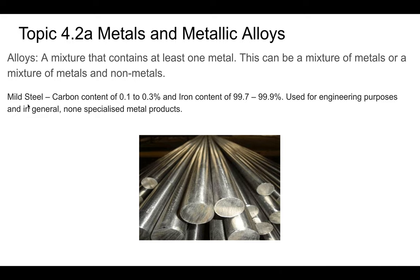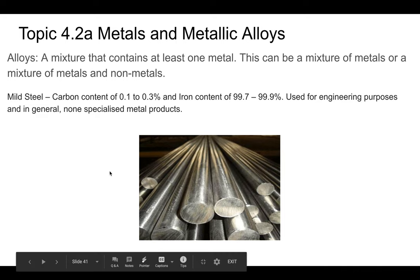Let's talk about ferrous alloys. The first is mild steel, which is a mixture of carbon and iron used for engineering purposes. It's very tough compared to high carbon steel, which has a larger percentage of carbon. High carbon steel is more brittle but harder.